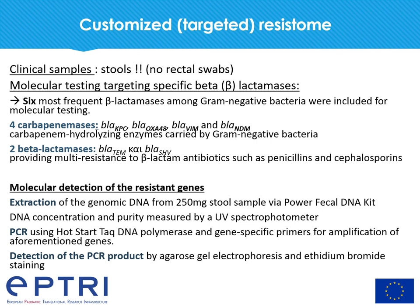We did molecular testing targeting six of the most frequent beta-lactamases among gram-negative bacteria. These included four carbapenemases: KPC, OXA-48, VIM, and NDM. We also targeted two beta-lactamases, TEM and SHV, that provide multi-resistance to beta-lactam antibiotics such as penicillins and cephalosporins. Molecular detection of resistance genes was performed by DNA extraction, PCR, and detection of the PCR product according to standard procedures.